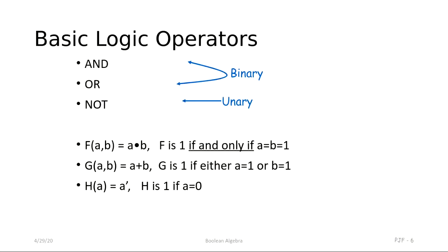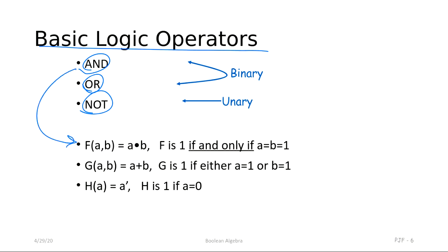Okay guys, starting from where we left yesterday about combination logic circuits. Yesterday we were discussing about some basic functions like AND, OR, and NOT. These are the basic binary functions which are operated by the logic gates. AND represents multiplication, OR represents addition, and NOT is representing inversion of any constant.